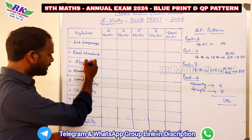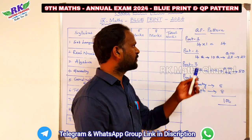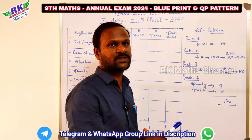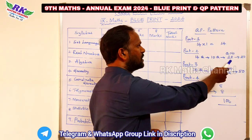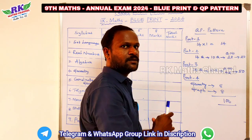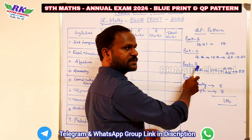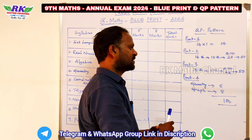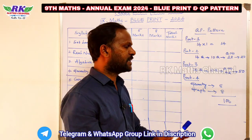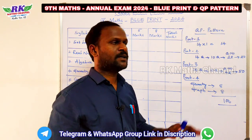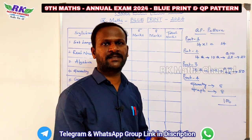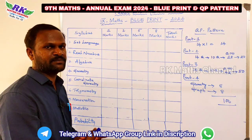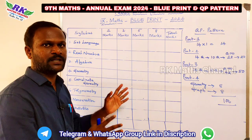I will check you the blueprint. We have a total of 9 units. Part 1 has 14 one-mark questions. Part 2 has 14 two-mark questions — 10 questions with question number 28 compulsory — totaling 20 marks. Part 3 has 14 five-mark questions — 10 questions with question number 42 compulsory — totaling 50 marks. Part 4 is geometry and graph: 8 plus 8 equals 16 marks. All marks total 100 marks. This is the question pattern for the public annual exam.